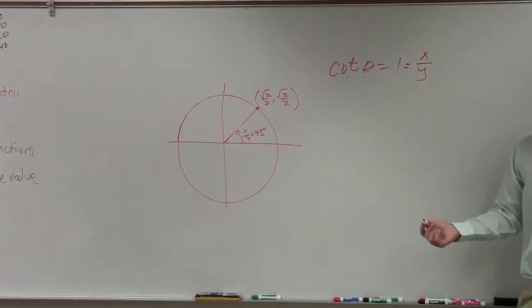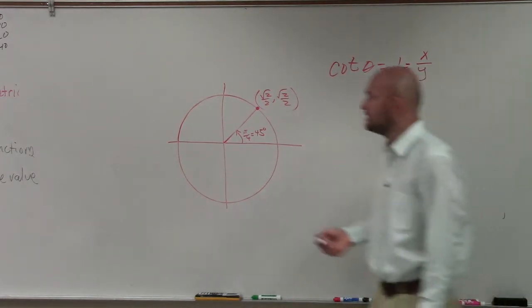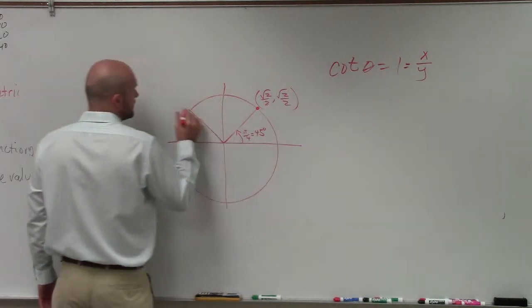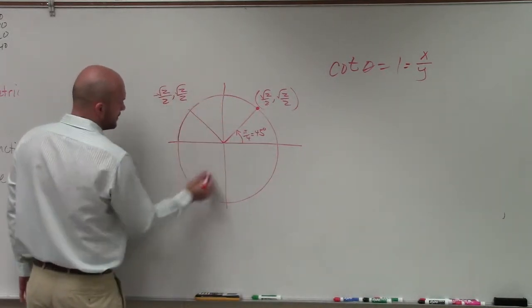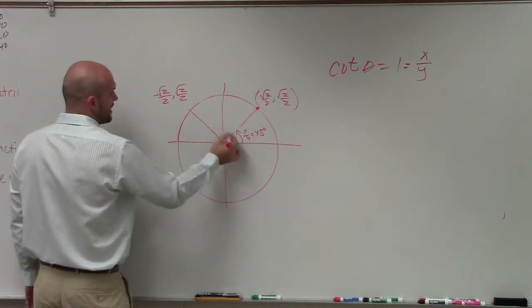But is that the only time when I have my x over y equals 1? Well, no, that's not. Because here, I have negative square root of 2 over 2, comma, square root of 2 over 2. That's at 3π over 4.